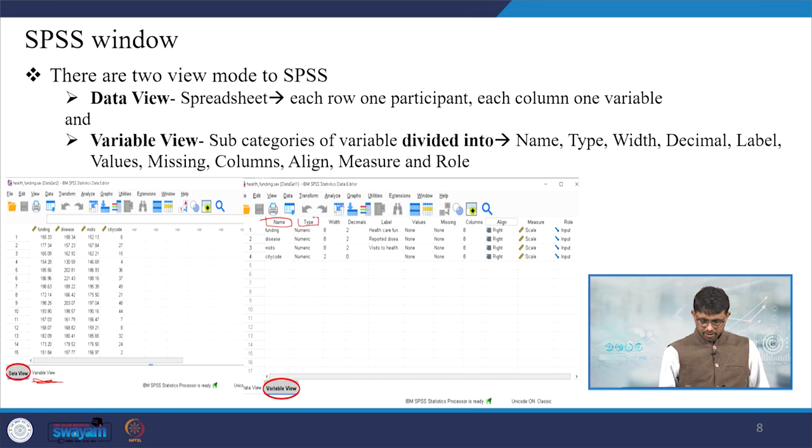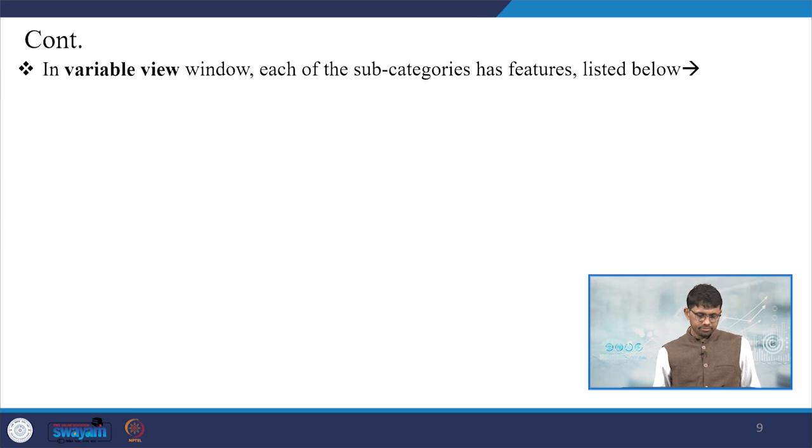Most importantly, we type the name of the variable, then specify the width, character type whether string or numeric, decimals, values, then the details about that variable. Like if we're writing health care funding, this is called the label.